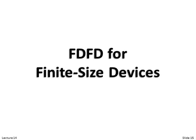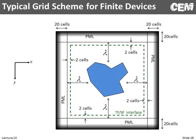What about finite-sized devices? These are not periodic — how do we handle that? We really know all the same rules, with just a little difference. Now we have a PML going all the way around, with our device still in the middle and about a wavelength separating the device and the PML. We now have a Total Field Scatter Field region that forms a box, slightly outside the PML, letting us record scattered fields between the interface and the PML. I still like to keep my PMLs about 20 cells. We just don't have periodic boundaries on the left and right anymore — we use a PML and need space between the device and the PML.